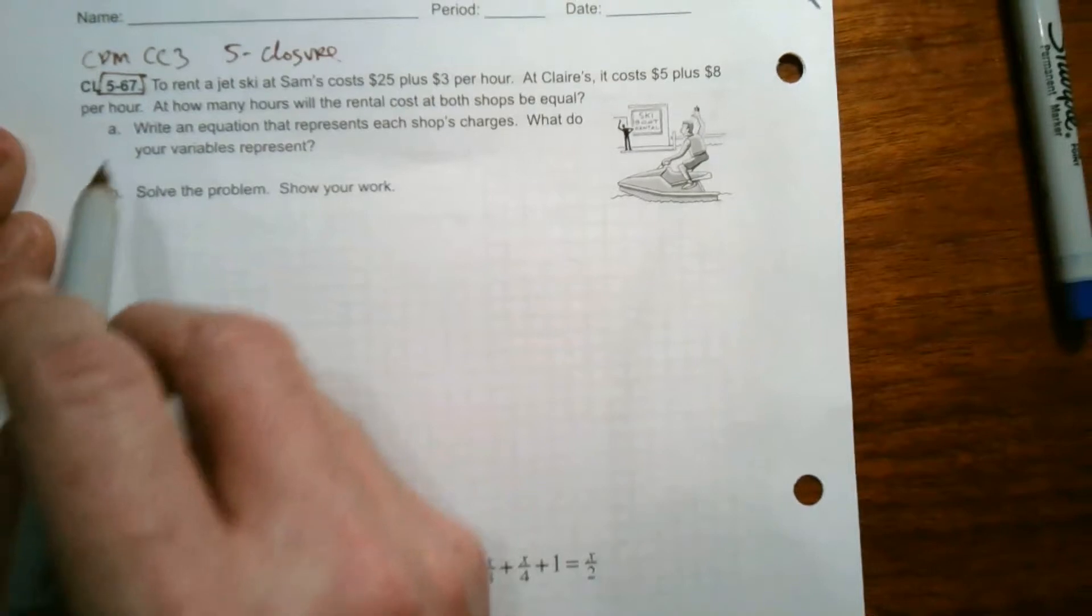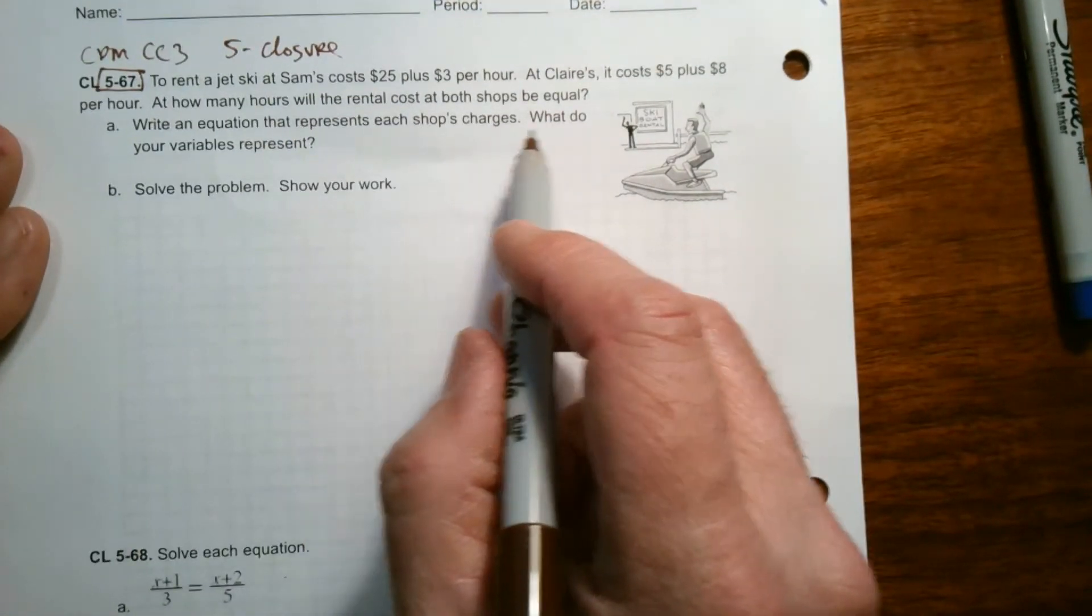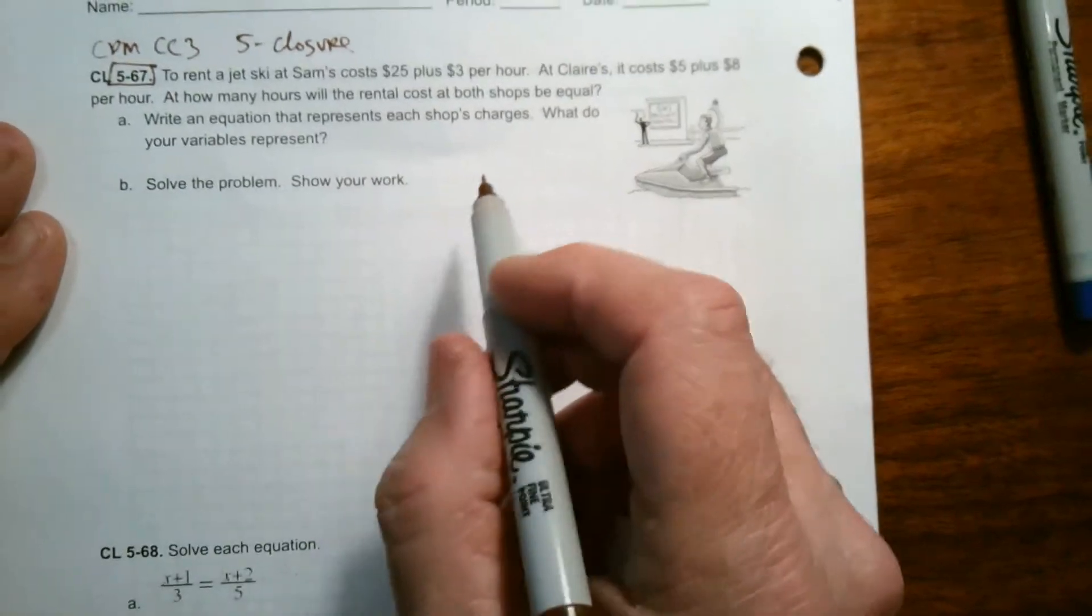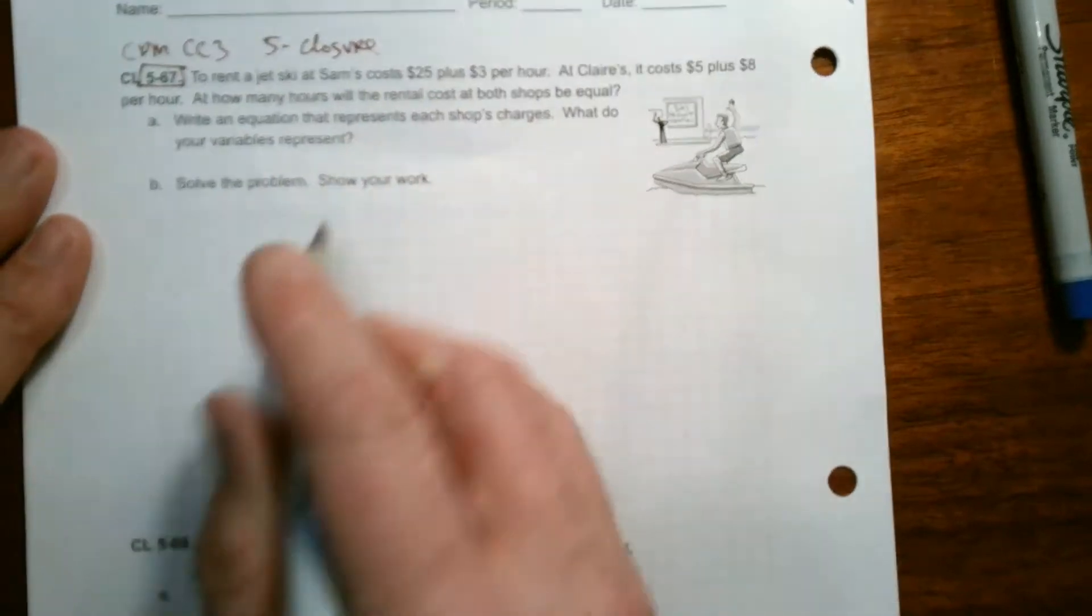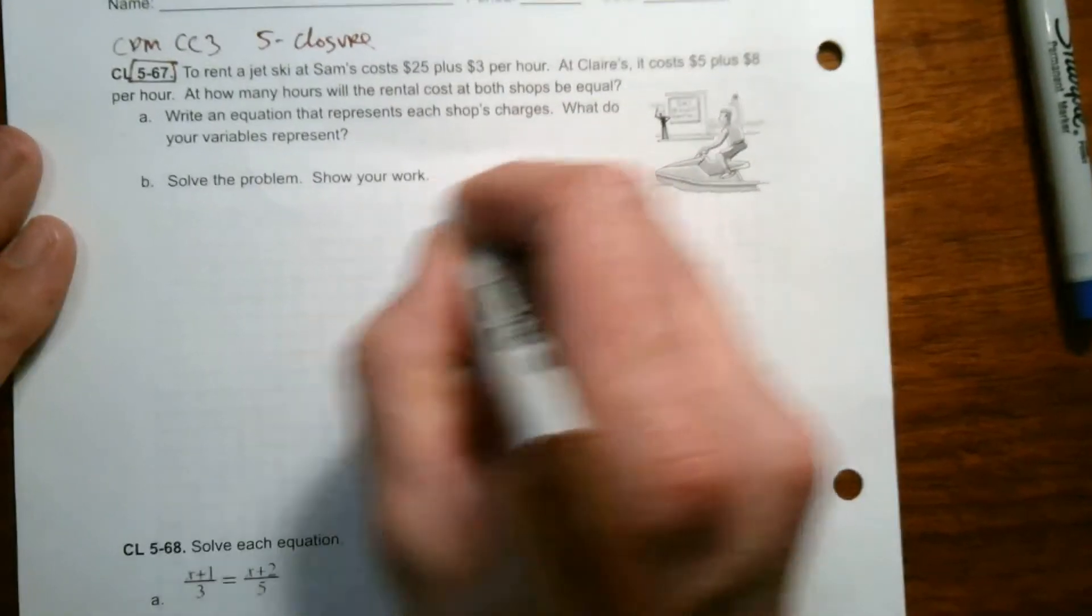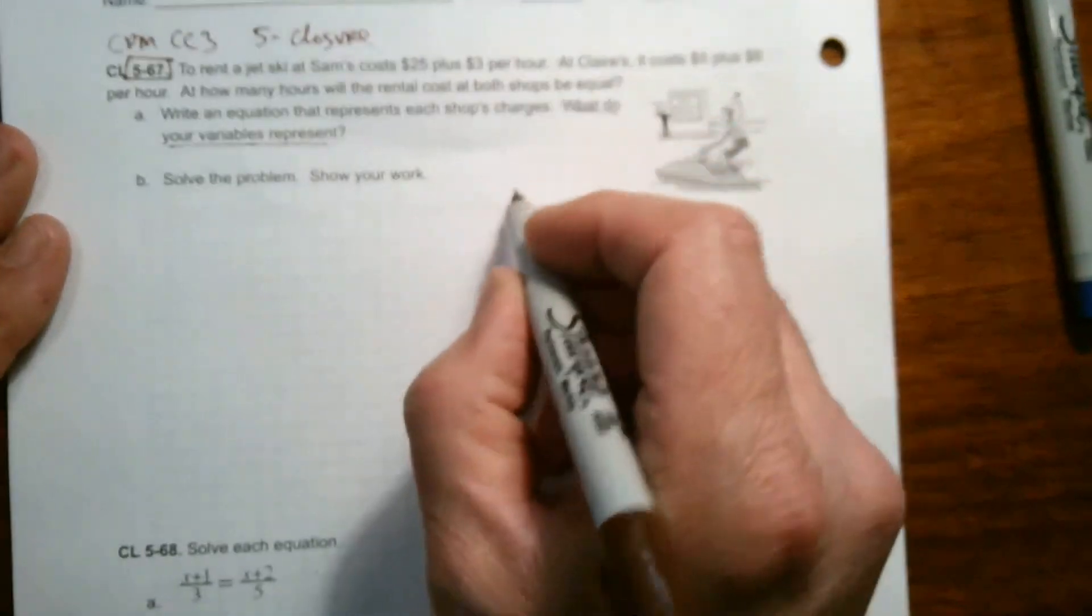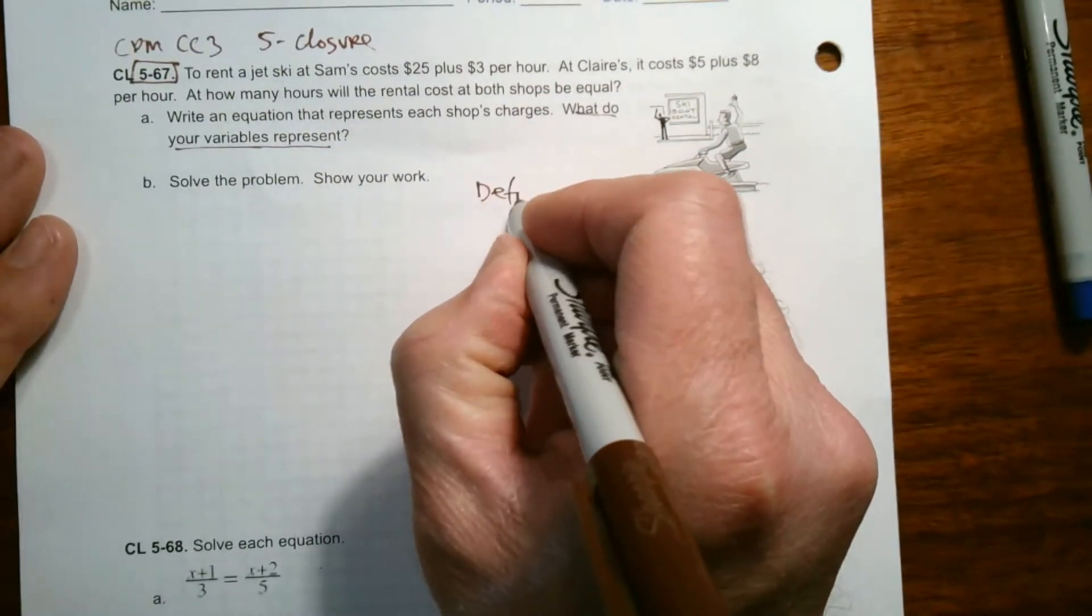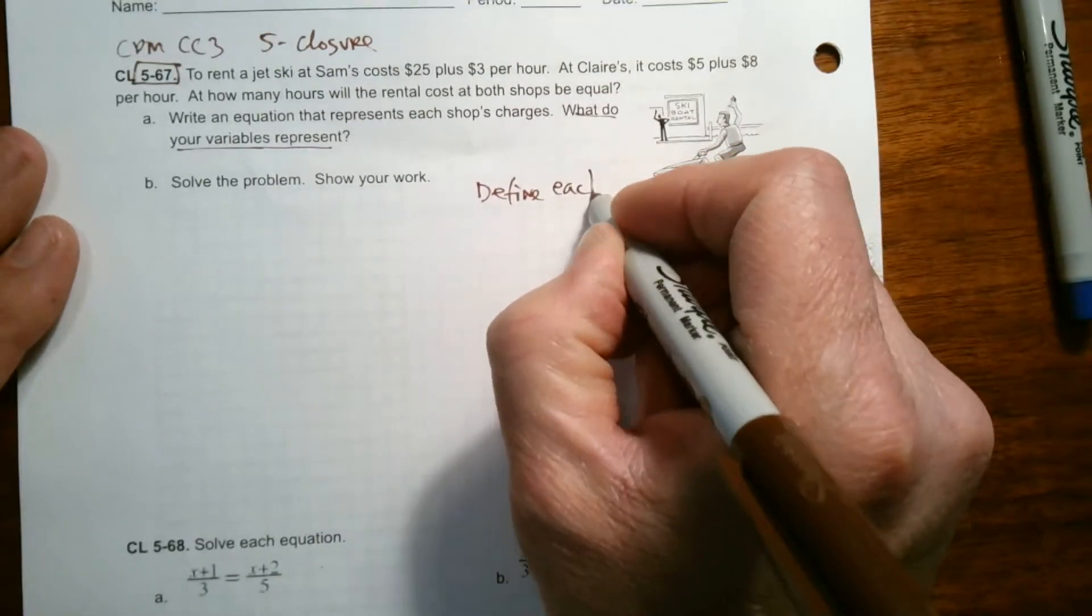So it asks us to write an equation that represents each shop's charges. What do your variables represent? So I'm going to put all my work down here. So I'm going to say for A, first of all, when it says what do your variables represent, that question, that's defining the variable. So I want to define each variable.